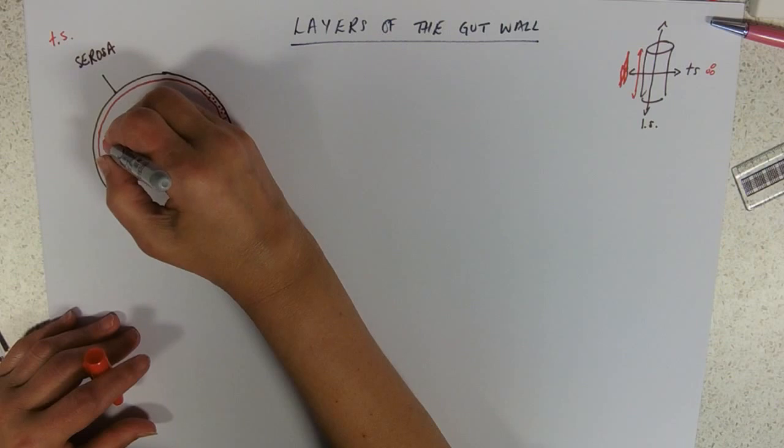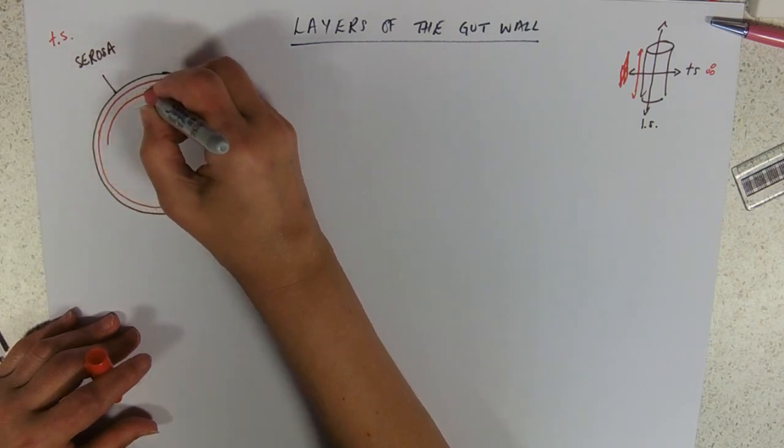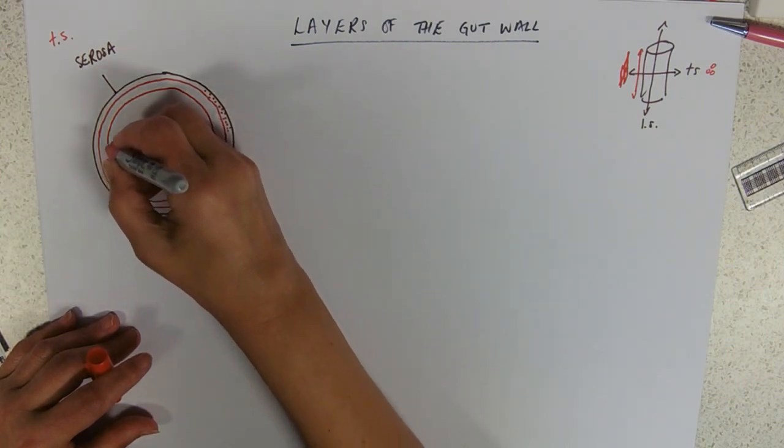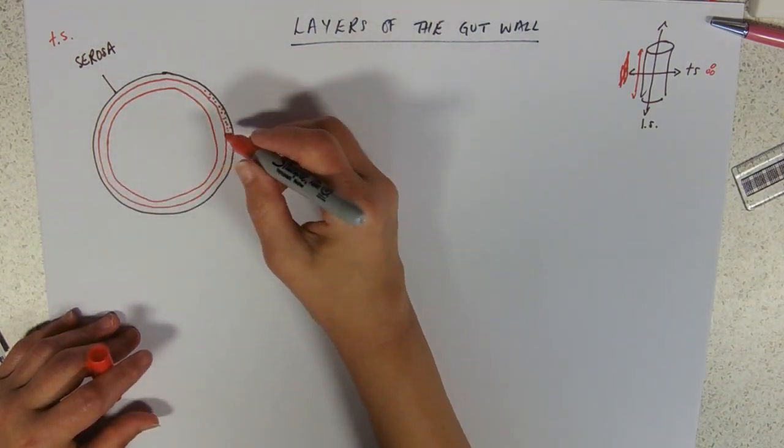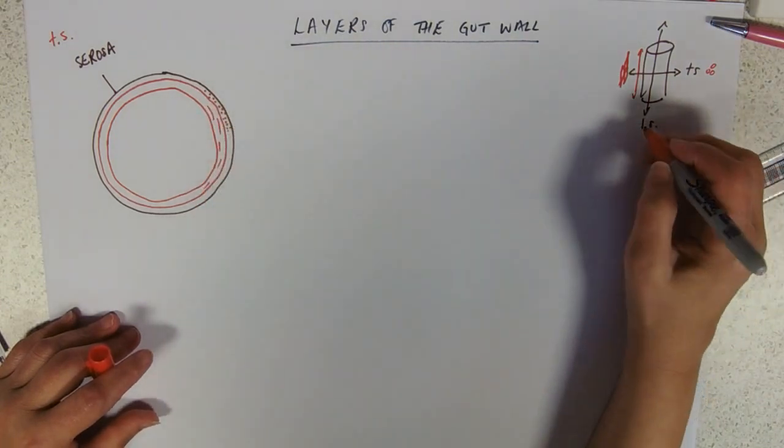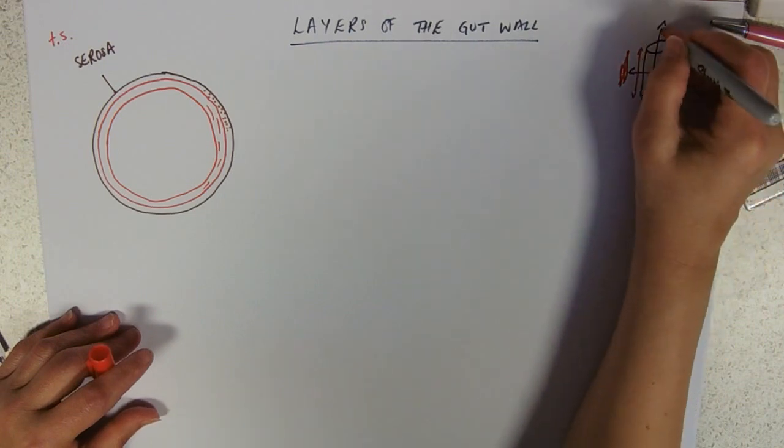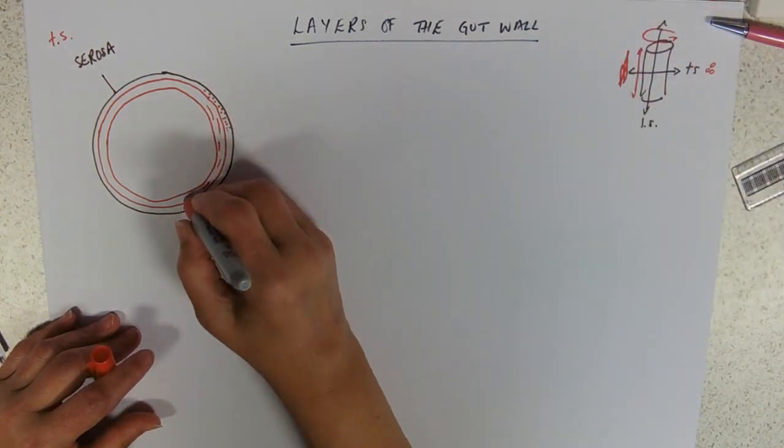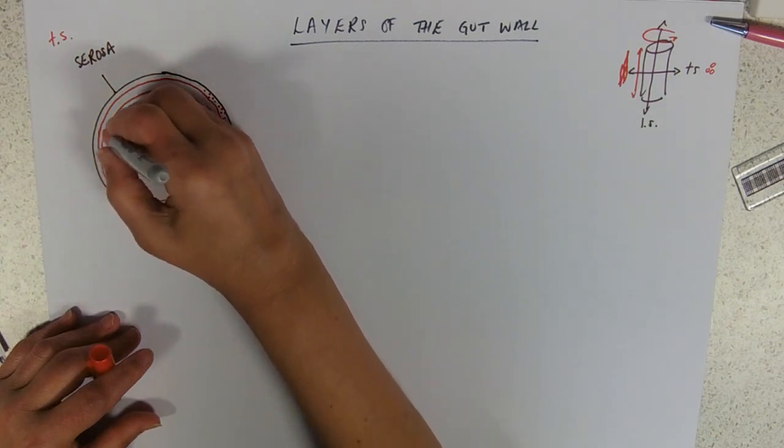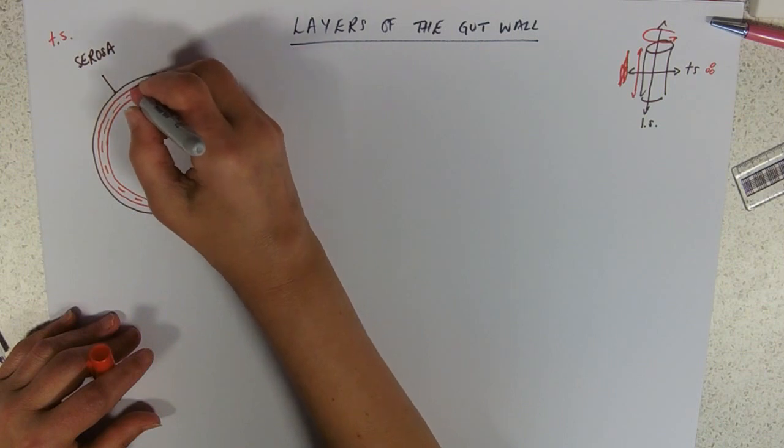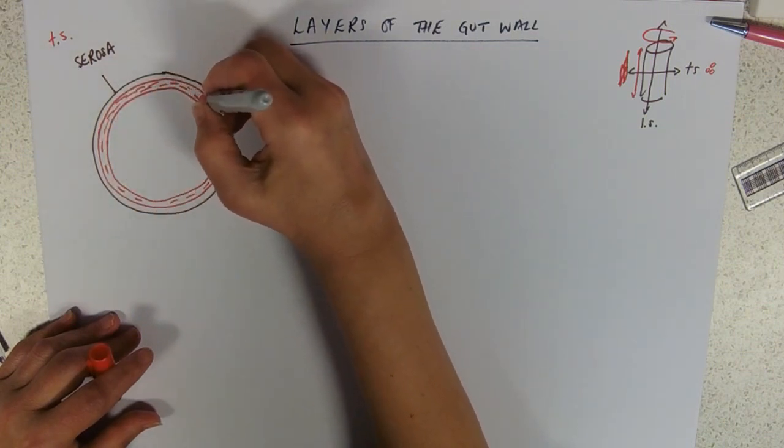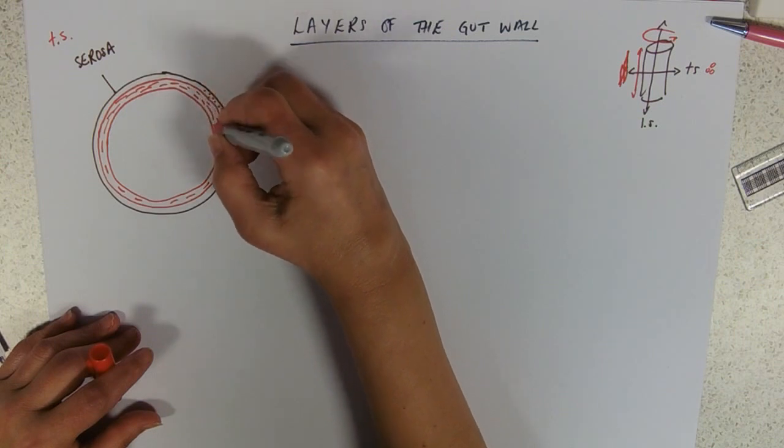We've then got a layer of circular muscle. The circular muscle fibers are arranged around, so these are the ones that are going around the gut like that. In a transverse section you'll see the fibers are sort of lined up when you look down the microscope.